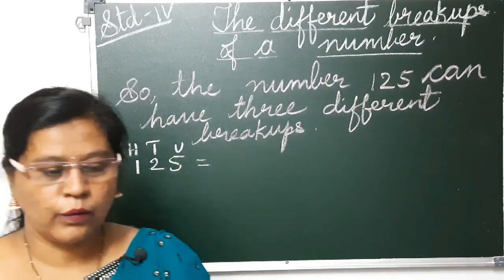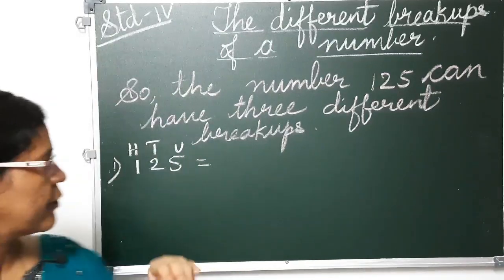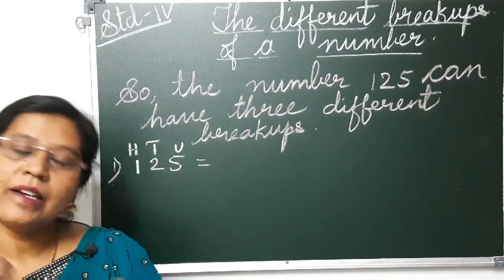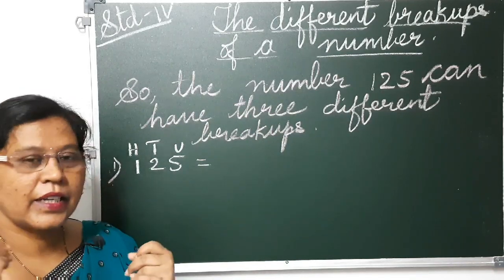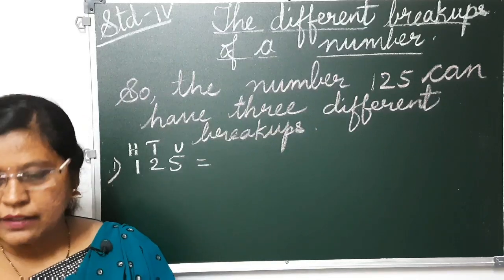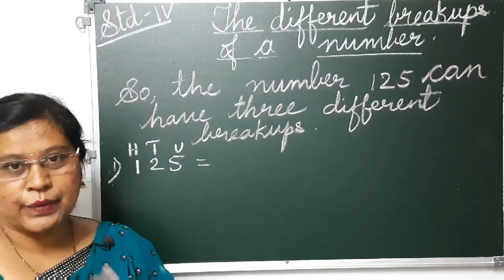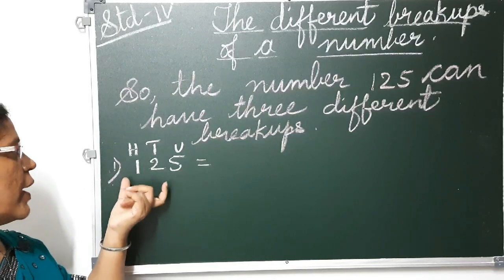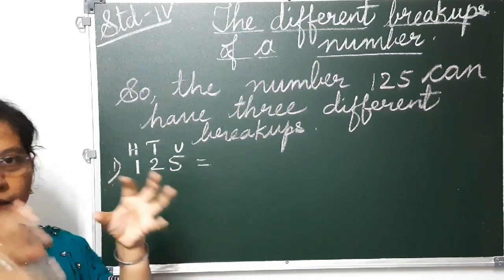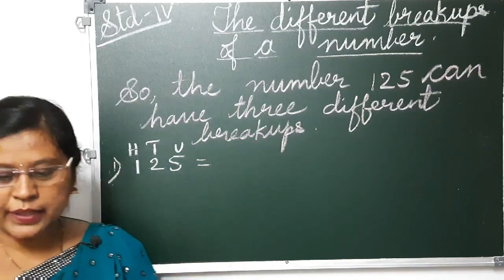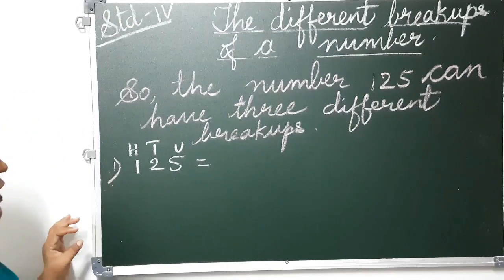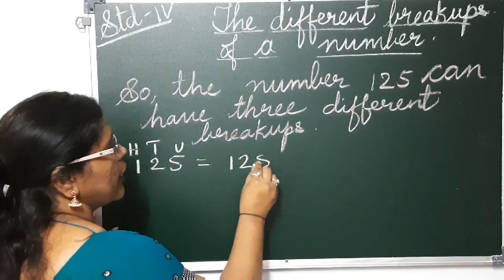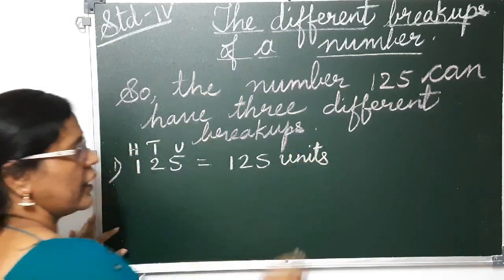For example, if you want to give 125 rupees to your friend, you have to break it into units. The first break up is like 125 units as a whole — like 125 coins. If you have that many coins, you can give them. So that will be the first break up of 125: that is 125 units. If you have that many coins you can give; otherwise we look at the next break up.